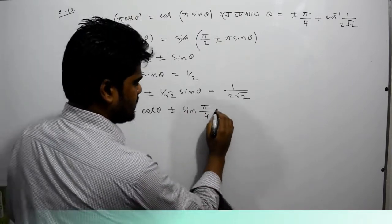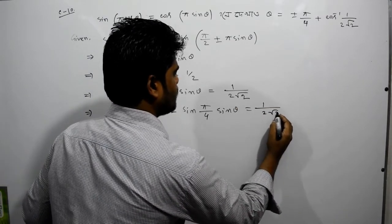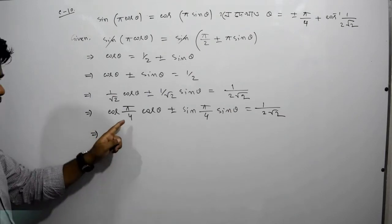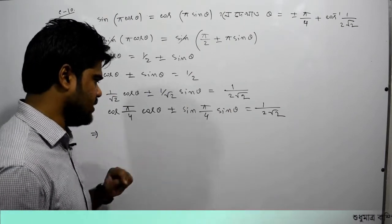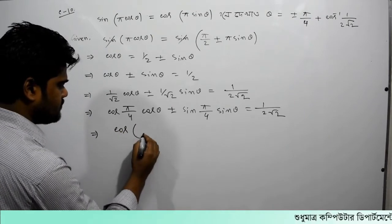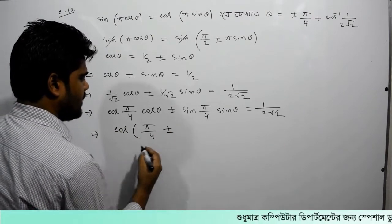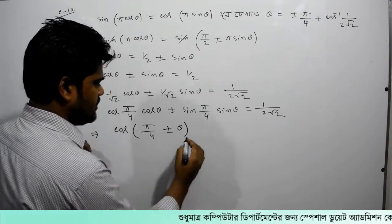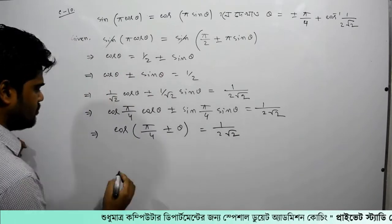Sin theta equal to 1 by 2 root over 2. Let's look at this: cos a cos b plus minus sin a sin b. So we write cos(π/4 ± θ) equal to 1 by 2 root over 2.